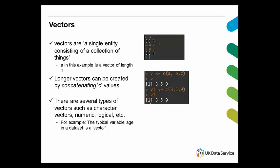There are different types of vectors, such as character or string, numerical that only hold numbers, or logical when they are true or false.